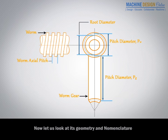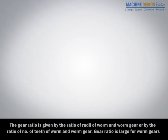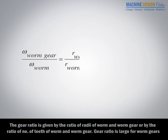Worm axial pitch, lead angle. The gear ratio is given by the ratio of radii of worm and worm gear, or by the ratio of number of teeth of worm and worm gear.